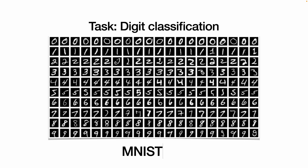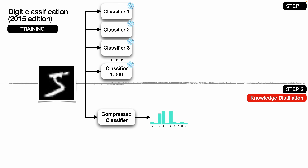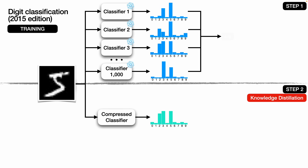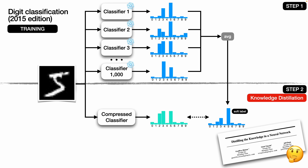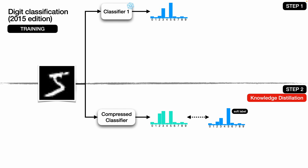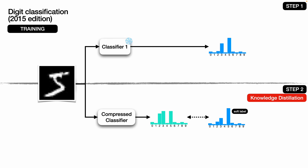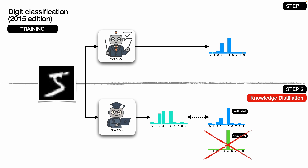Another fun fact: the dataset they used, called MNIST, was published by Yann LeCun, who today is Meta's chief scientist. The same recipe from 2006 applies here, but this time the output distribution is over the 10 digits, not just two yes-and-no labels. And building on top of this, the newer paper from Google makes a very interesting discovery: distillation is still useful even without an ensemble. If we have a single classifier that we want to compress into a smaller model, we are better off training the compressed model on soft labels rather than directly on the one-hot true label. In this paper, they also coined the teacher-student terminology, which reflects so well the relationship between these two models.